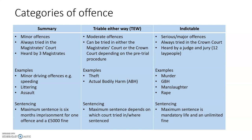Triable either way offences are moderate offences, and they can be tried in either the Magistrates' Court or the Crown Court, depending on the pre-trial procedure, which we'll deal with shortly. Examples include theft and actual bodily harm, which is quite often shortened as ABH. The sentencing for these will depend on which court they're tried in and where they're sentenced.